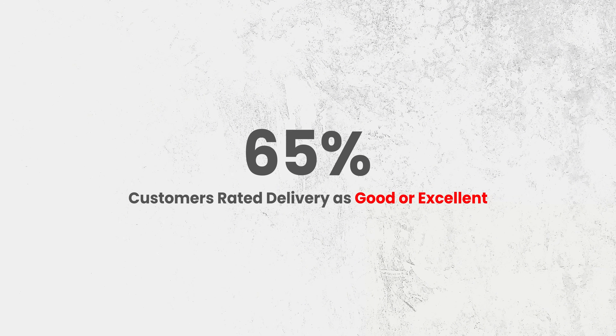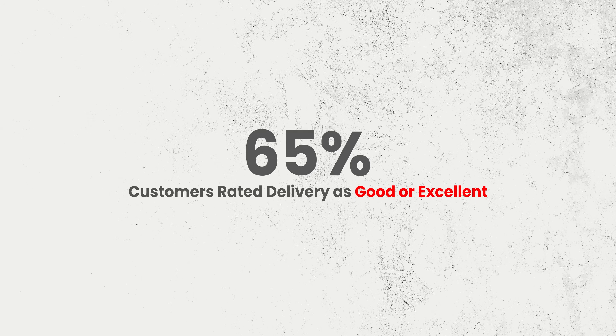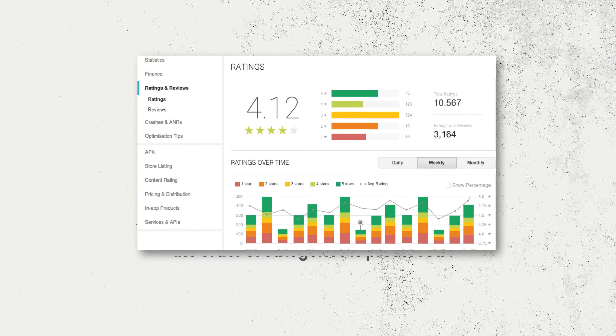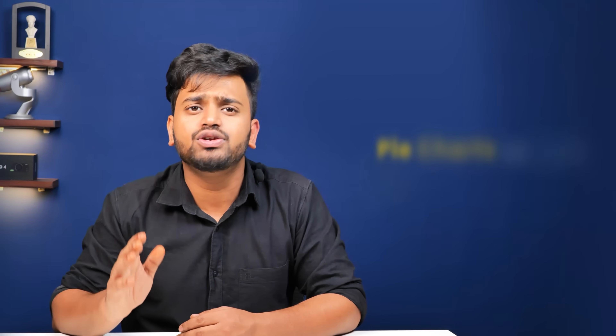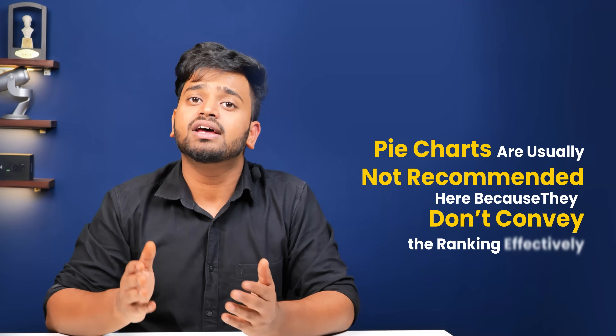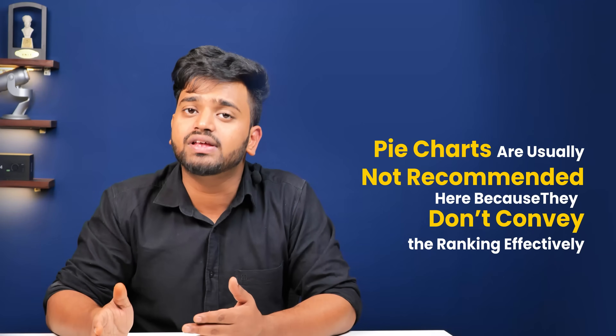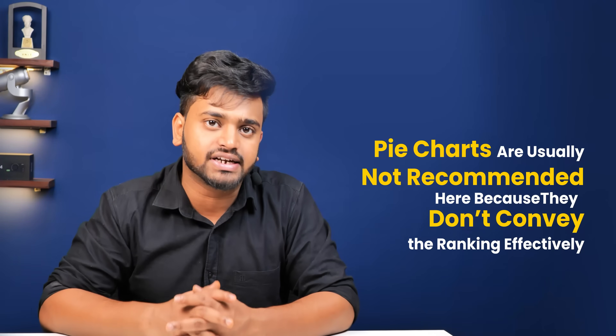Businesses often summarize it with percentages, such as 65% of customers rated delivery as good or excellent. When it comes to graphs, ordinal data should be shown in a bar chart where the order of the categories is preserved. Pie charts are usually not recommended here because they don't convey the ranking effectively.